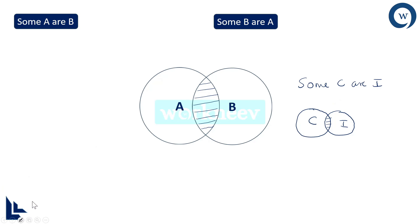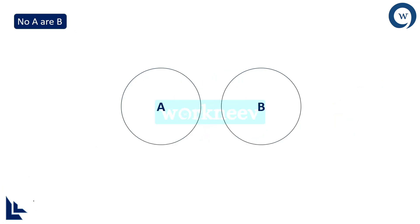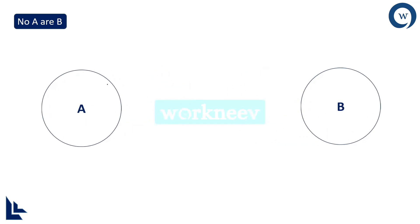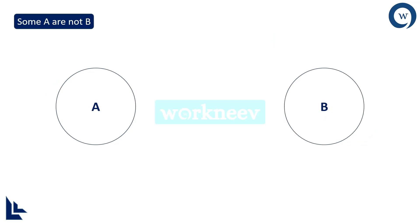The next statement is No A are B. As the name suggests, there has to be absolutely no common area between A and B — they both have to be completely separate. If I say no A belongs to B, I should also agree that no B belongs to A. So the reversal of this becomes No B are A.